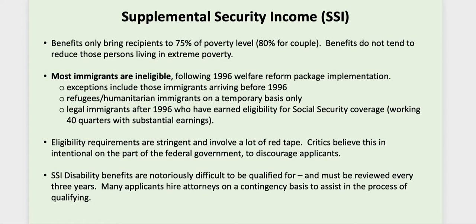Most immigrants are ineligible for SSI, with exceptions for those who arrived before 1996, refugees who can receive benefits temporarily, and legal immigrants after 1996 who have earned social security coverage through 40 quarters of substantial earnings. Eligibility requirements are stringent with a lot of red tape, and there are beliefs that this is intentional to screen out applicants. If applying for SSI disability, you can figure on being denied two or three times before approval, and many applicants hire attorneys on a contingency fee basis. Recipients still only reach about 75% of the poverty level, somewhat higher than TANF because SSI is indexed for inflation.